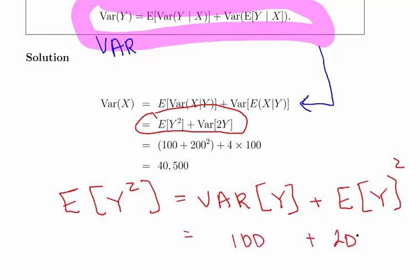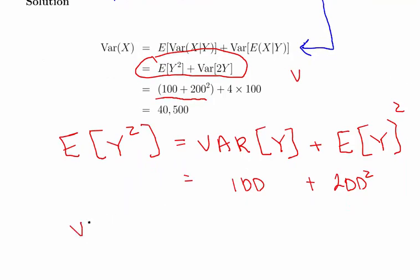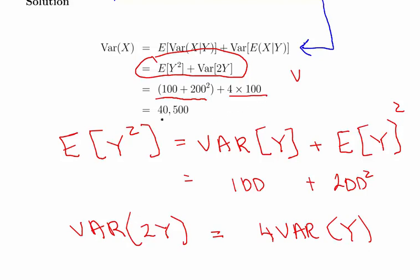The variance of 2y is simply 2 squared times the variance of Y, so that's 4 times 100. Overall, that's 100 plus 200 squared plus 4 times 100, which gives us 40,500. Remember that square inside the bracket refers to the 200 only.